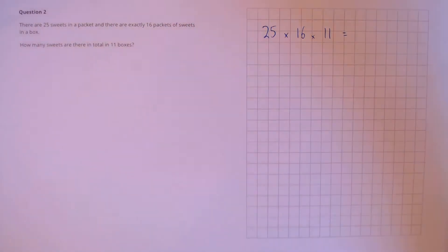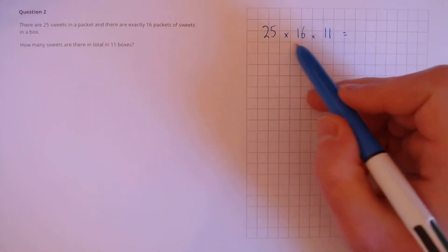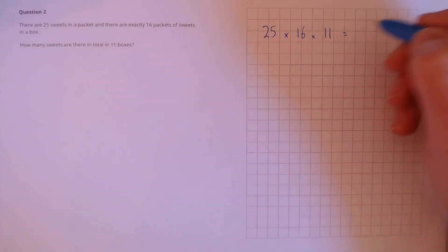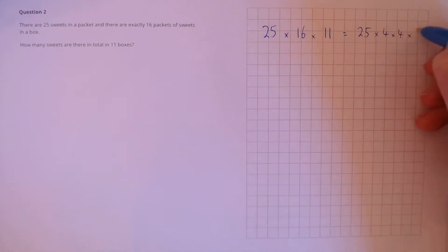25 multiplied by 4 is 100, so we see that here 16 can be split up into 4 times 4. This gives us 25 times 4 times 4 times 11.